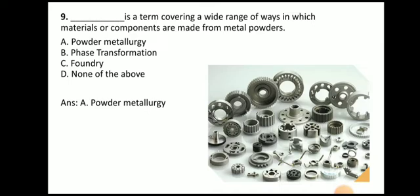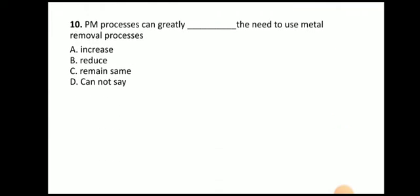Here you can see a wide range of products manufactured with powder metallurgy. Next question: Powder metallurgy process can generally blank the need of use of metal removal process. The answer is reduce. In powder metallurgy, no machining or very less machining is required, whereas in casting, machining is compulsorily required because we don't get sufficient surface finish.